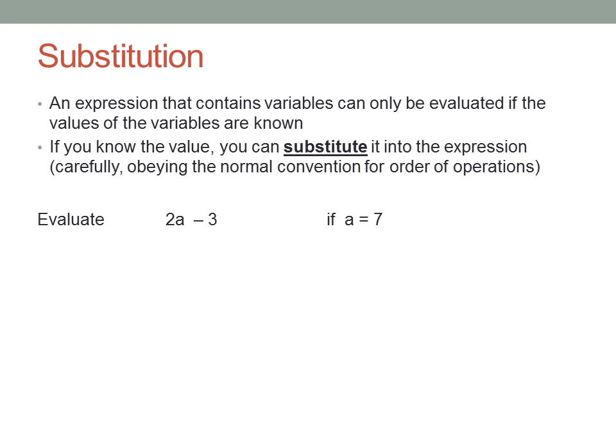Evaluate 2a - 3 if a equals seven. We have a value for the variable a, so we can substitute it into the expression. But be careful. Don't just replace the a with a seven as a purely written replacement. You've forgotten about the implied multiplication. This is not a two followed by an a, which ends up as twenty-seven. It's two times a.